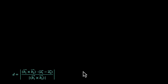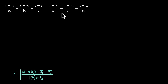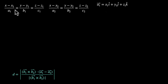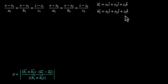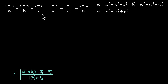Now let's figure out the distance in Cartesian form. If line 1 is given in Cartesian form passing through (x1, y1, z1) with direction ratios (a1, b1, c1), and line 2 passes through (x2, y2, z2) with direction ratios (a2, b2, c2), we can identify the vectors: A1 = x1·î + y1·ĵ + z1·k̂, A2 = x2·î + y2·ĵ + z2·k̂, B1 = a1·î + b1·ĵ + c1·k̂, and B2 = a2·î + b2·ĵ + c2·k̂.